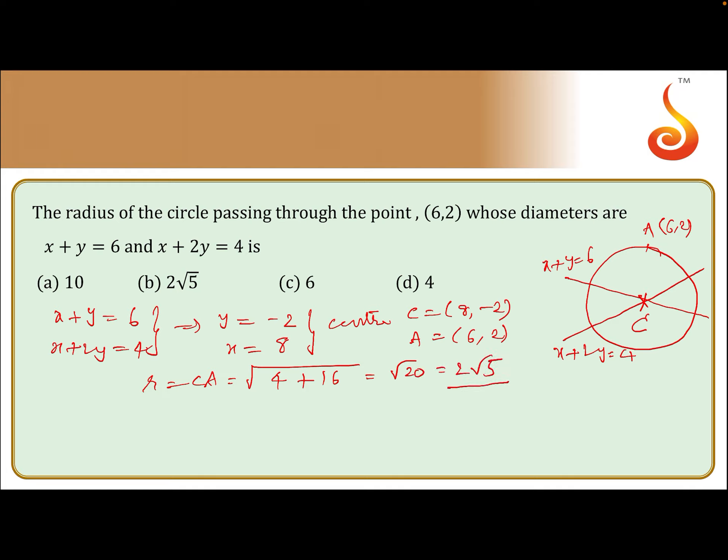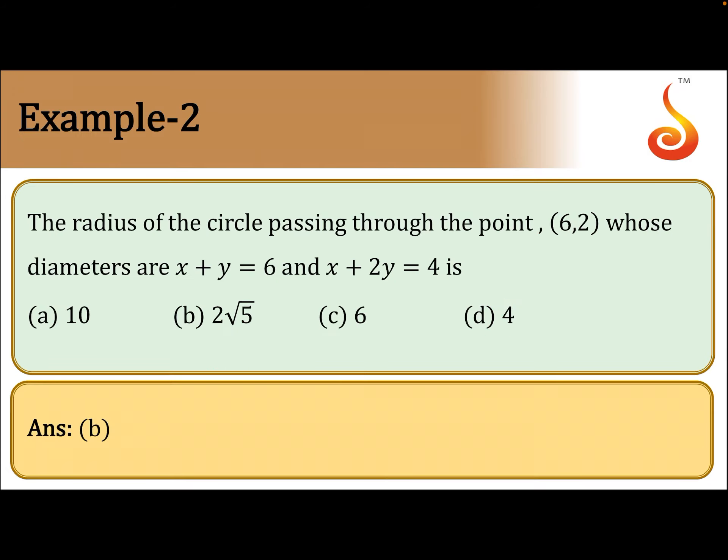The radius of the circle equals 2√5, which is the second option. Yes, B is the answer.